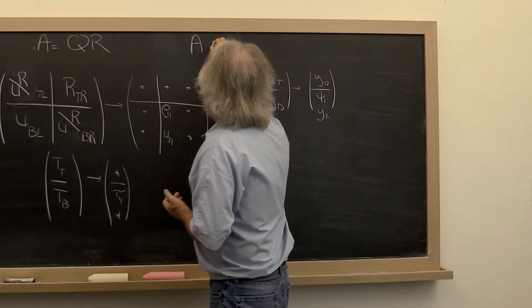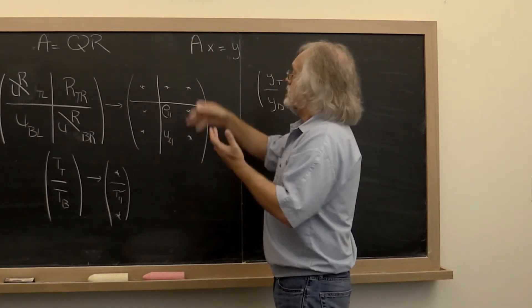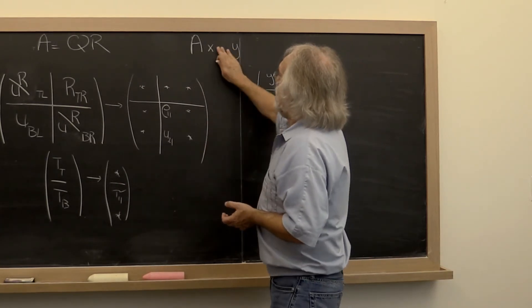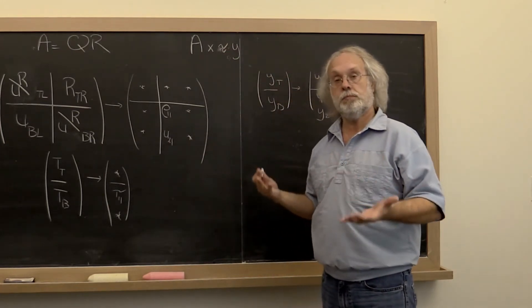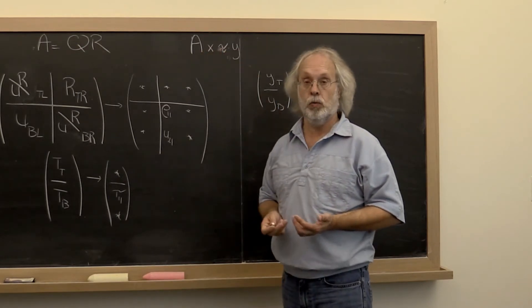Well, if you want to solve Ax equals y, but A has more rows than it has columns, then this becomes solving the problem approximately. You're trying to find the best x such that A times x is approximately equal to y.